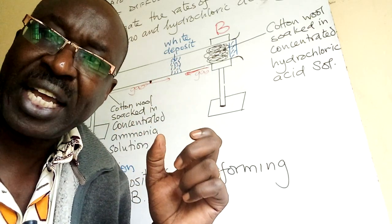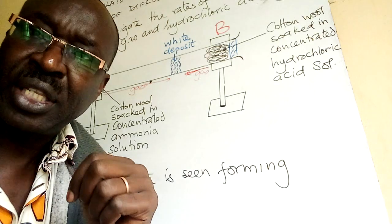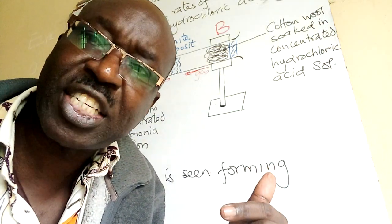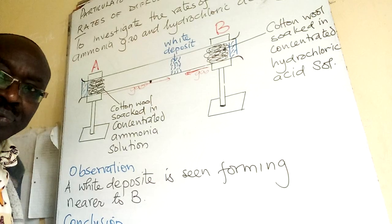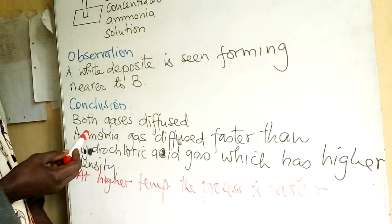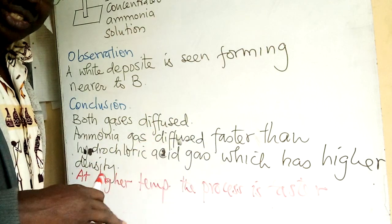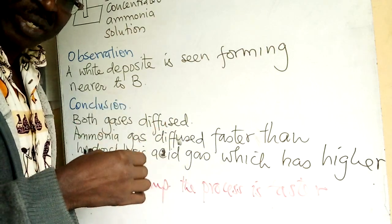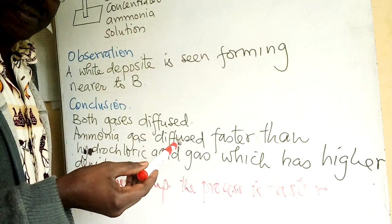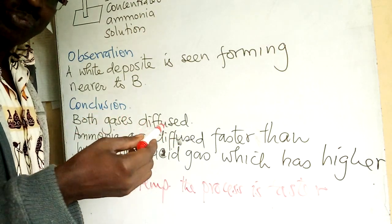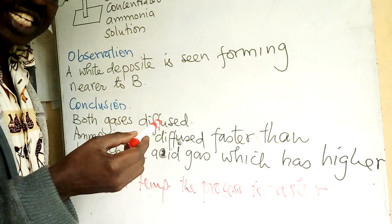Since both gases are in continuous random motion, if temperature is increased, the one which moves fast will move even faster. In the conclusion, you must comprehend three things: both gases moved and spread out; one spread out faster than the other; and ammonia gas spread out faster than hydrochloric acid gas, looking at the distances they covered.